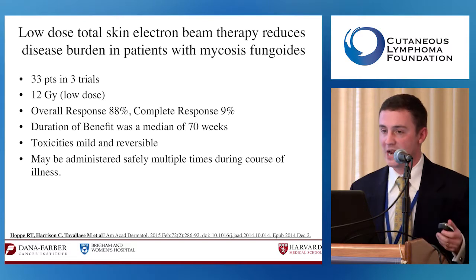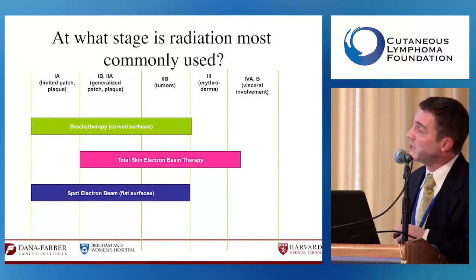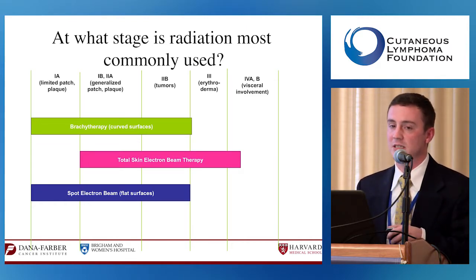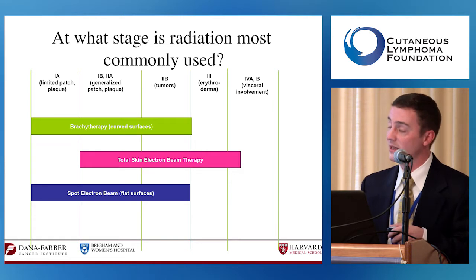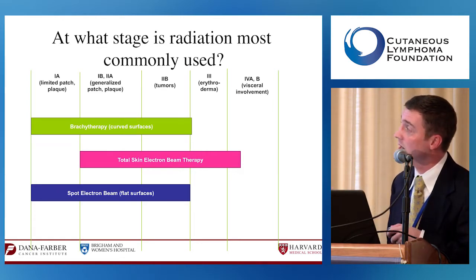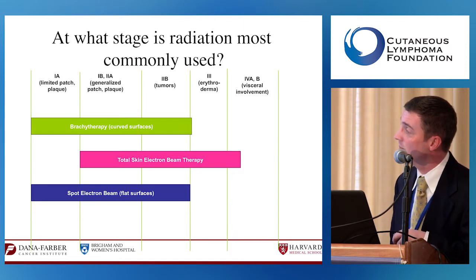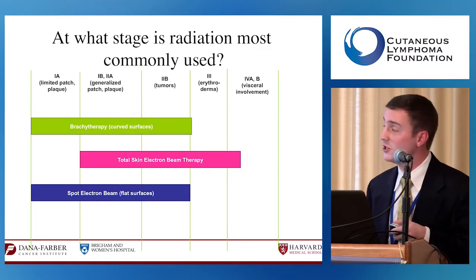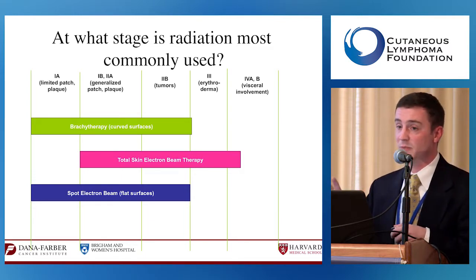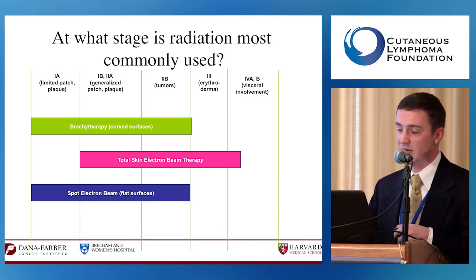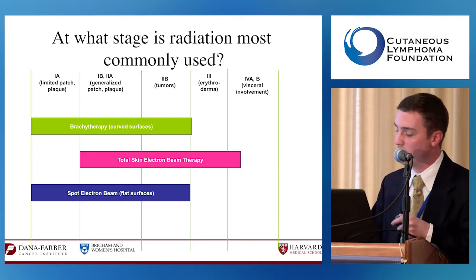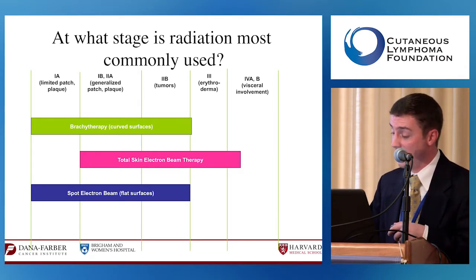We most often use localized radiation therapies in earlier stages for recalcitrant lesions—not as a first jump, but when other skin-directed therapies are failing. Total skin electron beam is used for patients with more widespread lesions. Electron beam is also being explored before transplants to eliminate malignant T cells, though more research is needed to determine if that approach is superior to standard care.